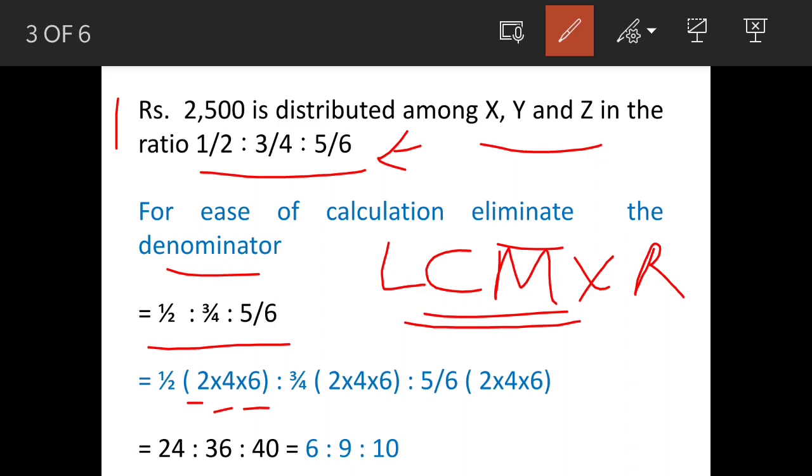When we do this, we get the ratio as 24 : 36 : 40. But these are still big numbers, and they're all multiples of 4, so we divide them by 4 to get 6 : 9 : 10. Now we have no fractions, so we'll solve the question with this ratio.